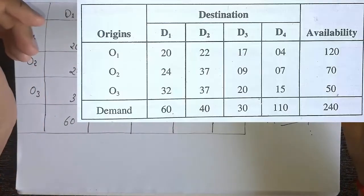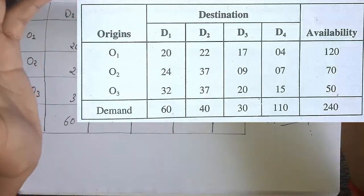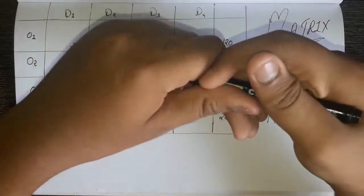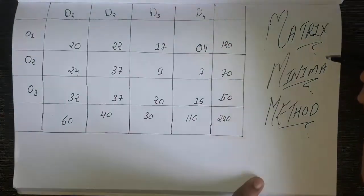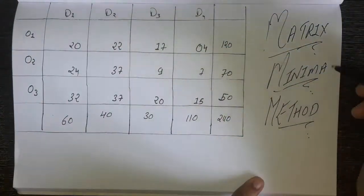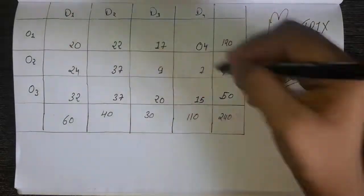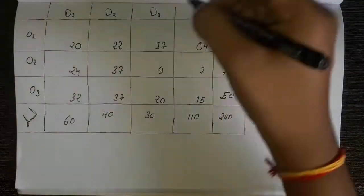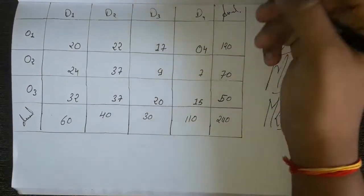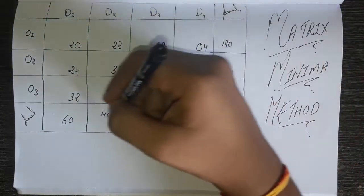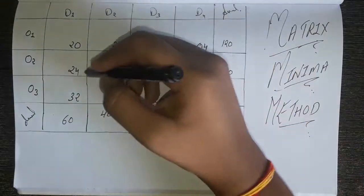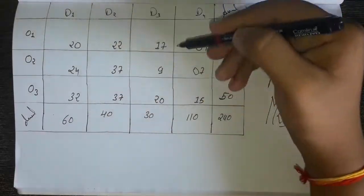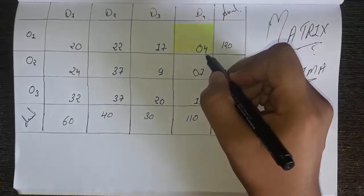Today we are going to solve this question which is on the screen. This is the same question as the northwest corner method. In the matrix minima method, as you can see in the name, it means finding the minimum in the matrix. So you have to look at the inside data — the demand, the availability — and find the smallest number among all values in the matrix.